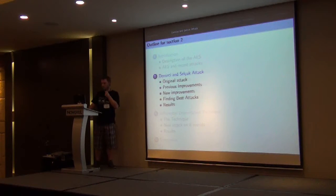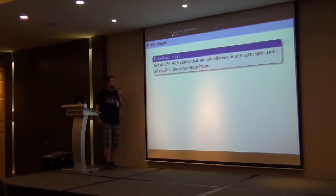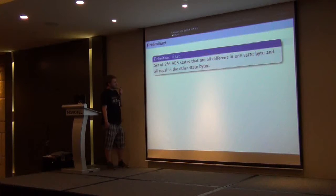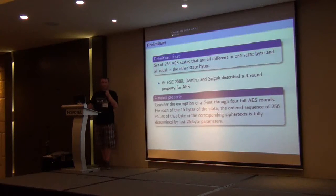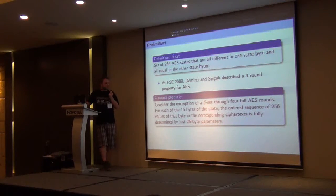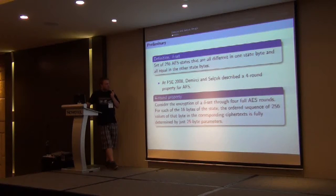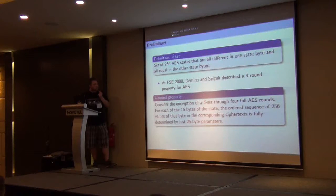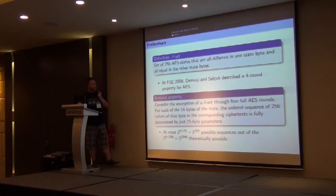Let's now talk about the attack of Demirci and Selçuk. First, I introduce the definition of a delta-set, which is a set of 256 AES states such that one byte is active and the others are constant. At FSE 2008, Demirci and Selçuk described a property for the AES: if we apply four AES rounds on a delta-set, then for each of the 16 bytes of the final state, the ordered sequence of 256 values of that byte is fully determined by only 25 byte parameters. As a consequence, the number of possible sequences is negligible compared to the number of theoretically possible ones.